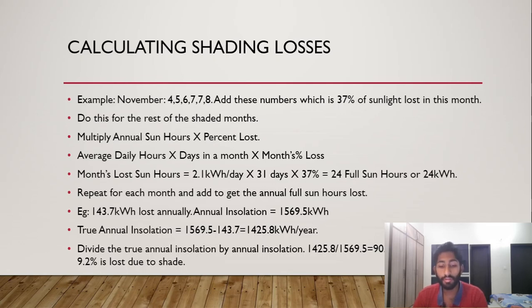And then what you do is you want to find out your annual insolation. So like I said, you can use PVWatts or whatever online resource tool to know how many hours of sunlight is available at your location annually. I've chosen 1569.5 kilowatt hours. You subtract these values to get the true annual insolation available, taking into account how many hours of sunlight lost annually. I get the value of 1425.8 kilowatt hours per year.